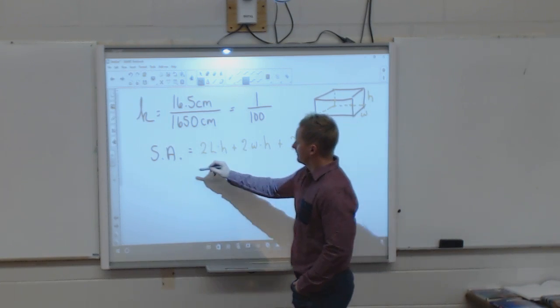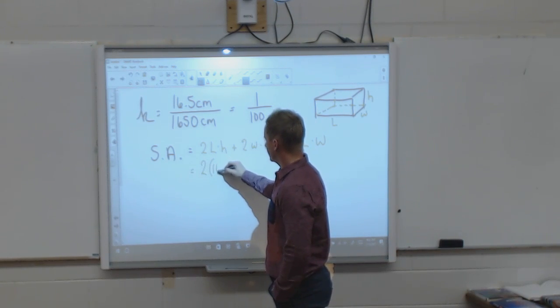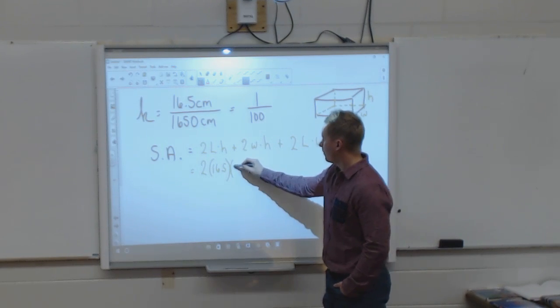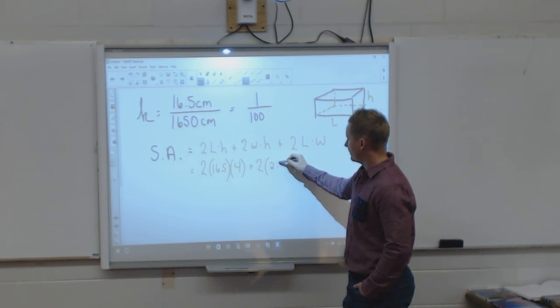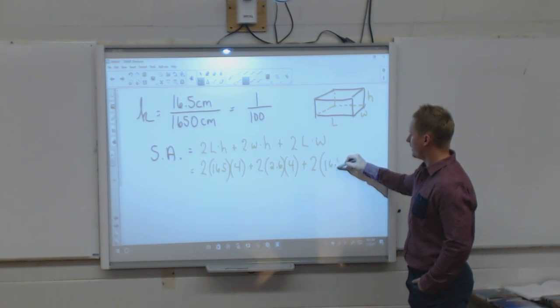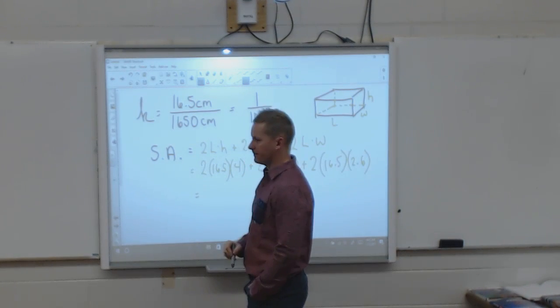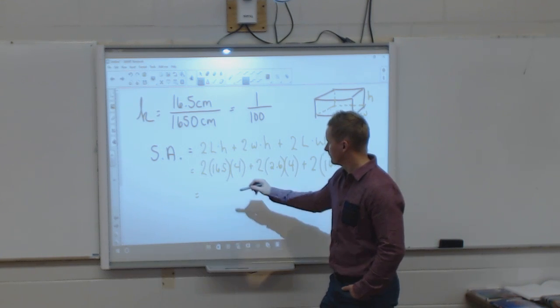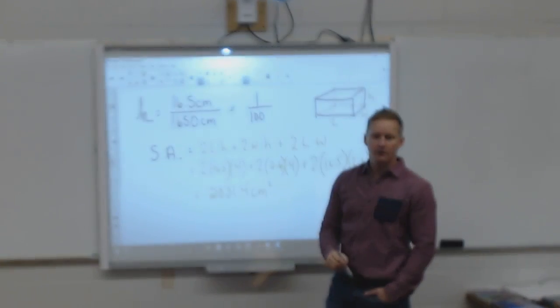So then, two times, what's the length of the box? 16.5. What's the height of the box? 4. Plus 2 times the width of the box, 2.6, height again is 4. Plus 2 times 16.5 times 2.6. So we get a surface area of 28,314 centimeters squared.